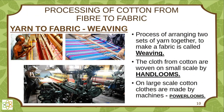Yarn to fabric — weaving: the process of arranging two sets of yarn together to make a fabric is called weaving. Clothes from cotton are woven on a small scale by hand looms. On a large scale, cotton clothes are made by machines called power looms, as you can see in the pictures.